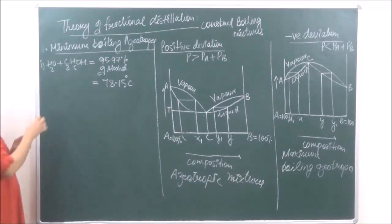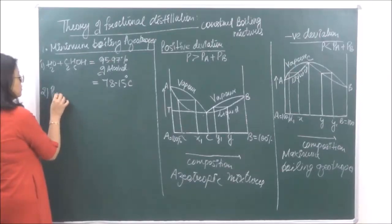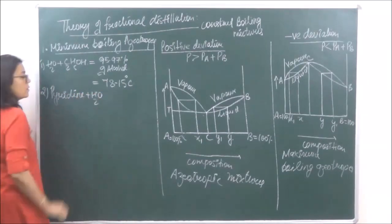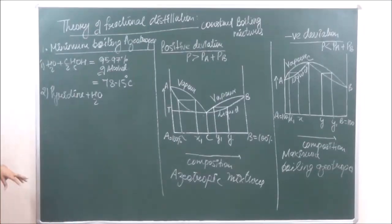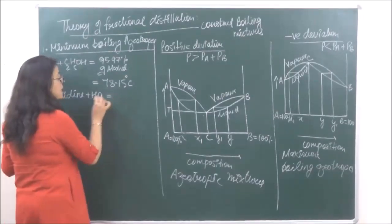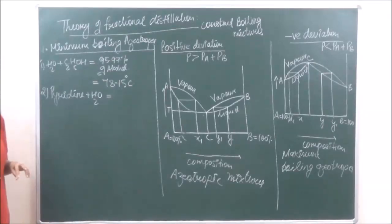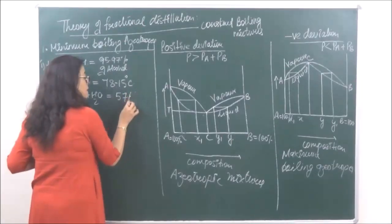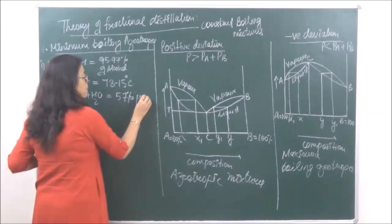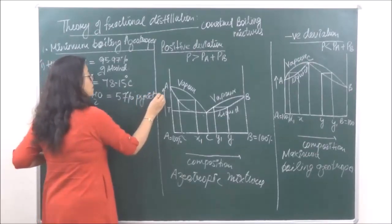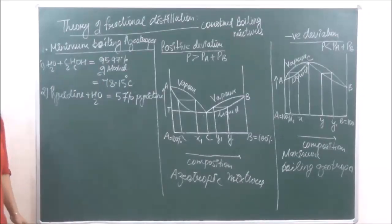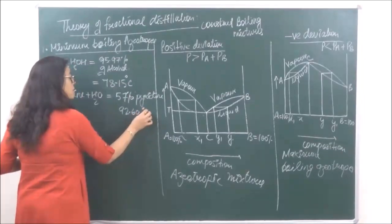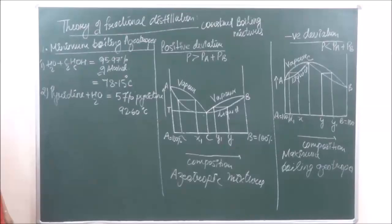The second example is pyridine plus water. Again at point C, we cannot completely distill both, but the composition is 57% pyridine, and the constant boiling temperature is 92.60 degree Celsius.